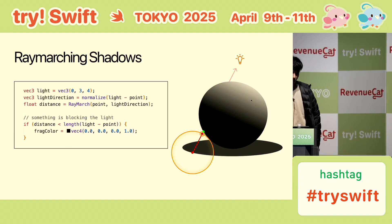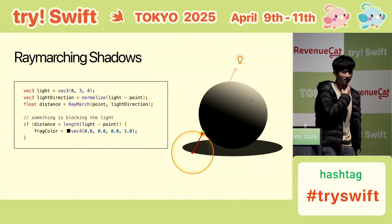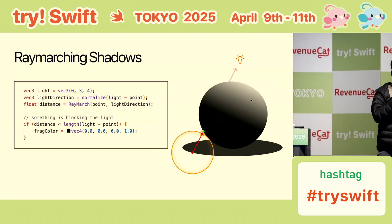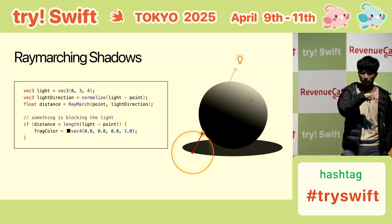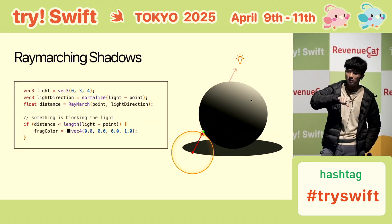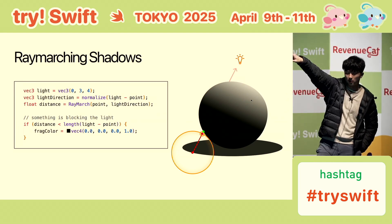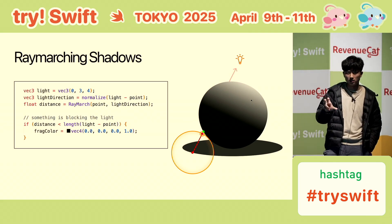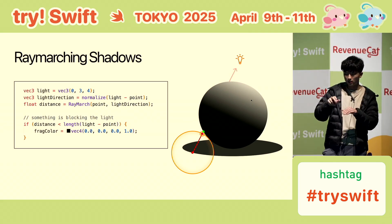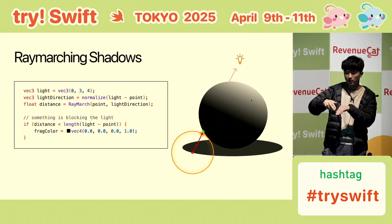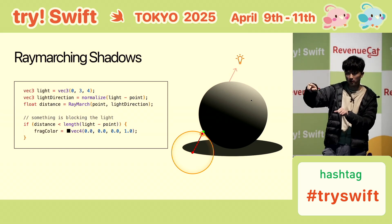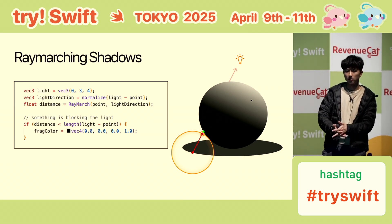There are also shadows — also using ray marching. You start from the surface and ray march in the direction of the light. Because ray marching gives you a distance, if the distance ray-marched is smaller than the distance to the light, something is blocking it, and that way you can cast a shadow.